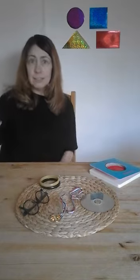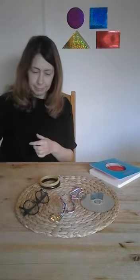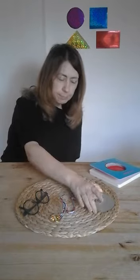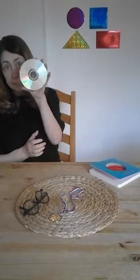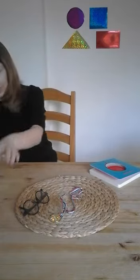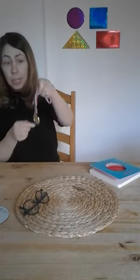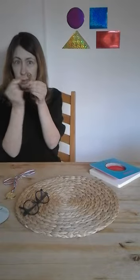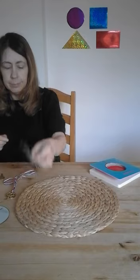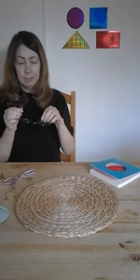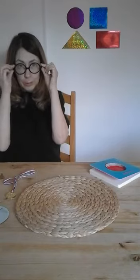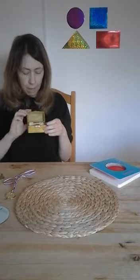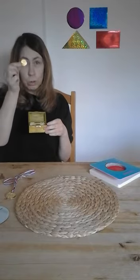A lid with a circle, some bracelets that are circles, a CD, that's a circle, a gold medal, a key with a small circle, some glasses with two circles, and inside this treasure chest I found lots of gold coins.